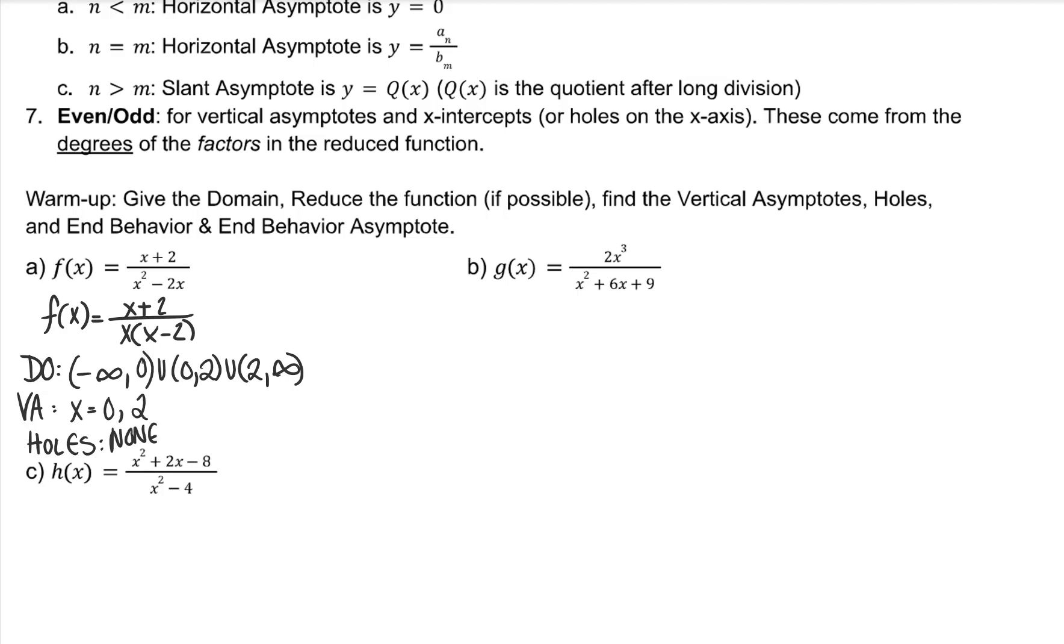And our end behavior and end behavior asymptote. If the degree of the numerator is less than the degree of the denominator, I know the horizontal asymptote is zero. So f of x approaches zero as x approaches negative infinity, and f of x approaches zero as x approaches positive infinity is our end behavior.